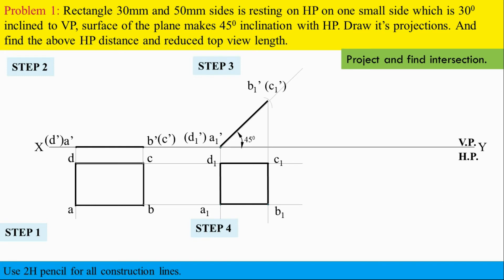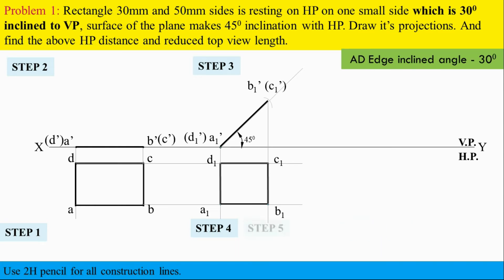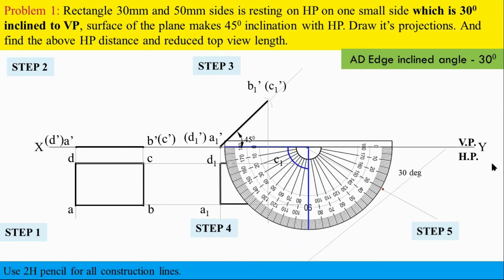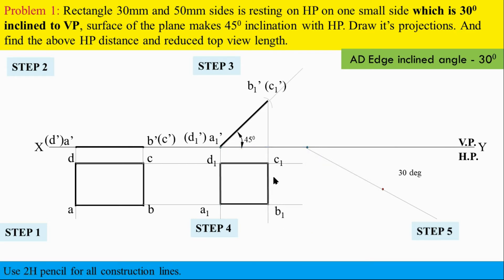Step five is the edge inclination or side inclination step. The angle in this problem is 30 degrees to the vertical plane. Draw a 30-degree line from the XY — you can draw it in either direction. Now copy step four and paste it into step five — that means tilt step four. Align the a1-d1 line along the 30-degree inclination line.